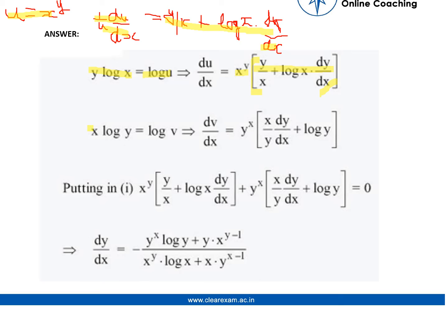Similarly, for v equals y to the power x, we get x log y equals log v. Then dv by dx can be calculated in a similar way to get y^x multiplied by (x by y times dy by dx plus log y).